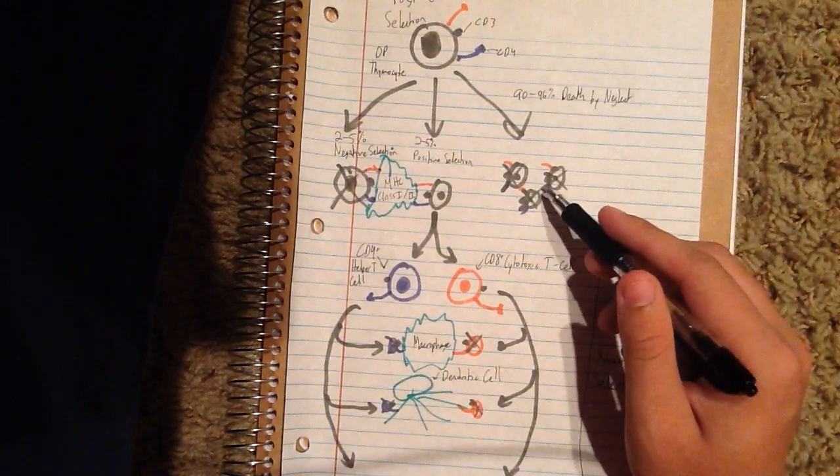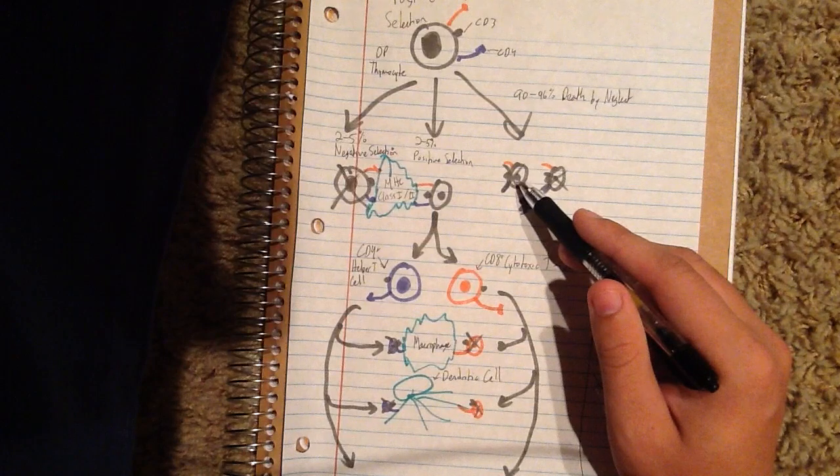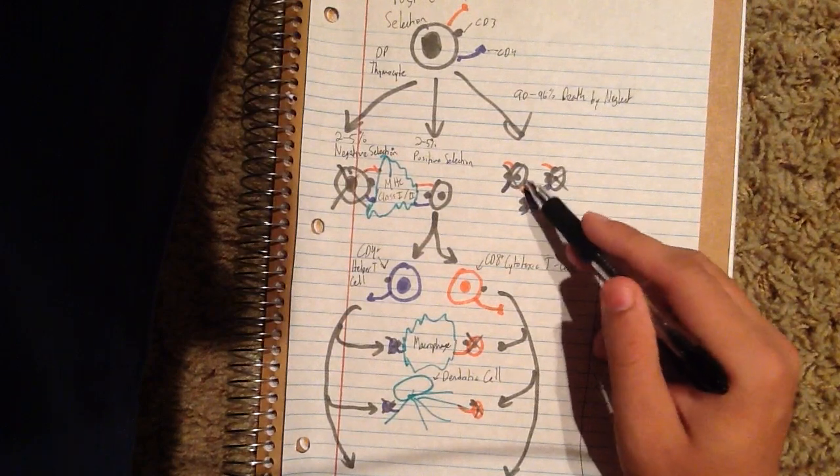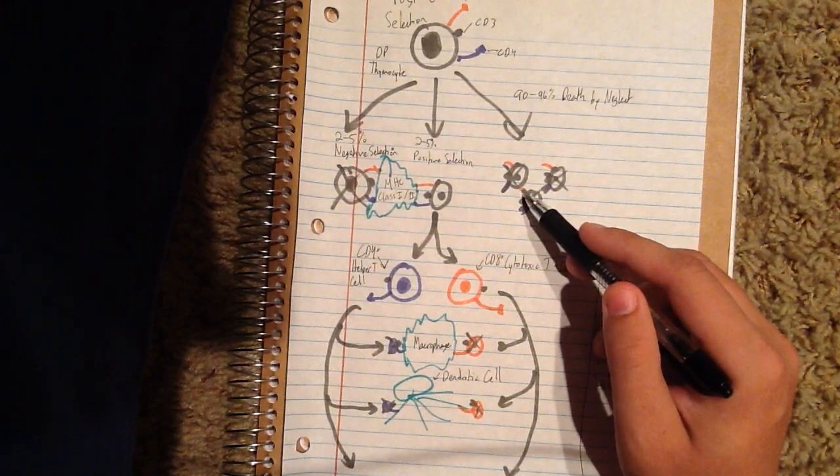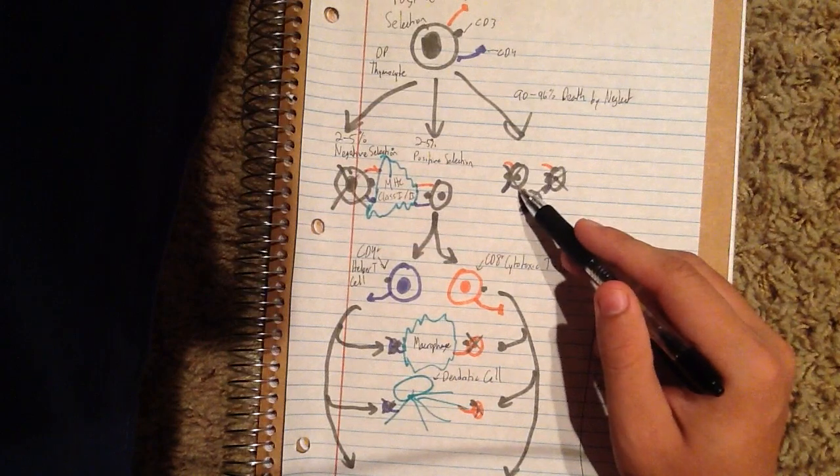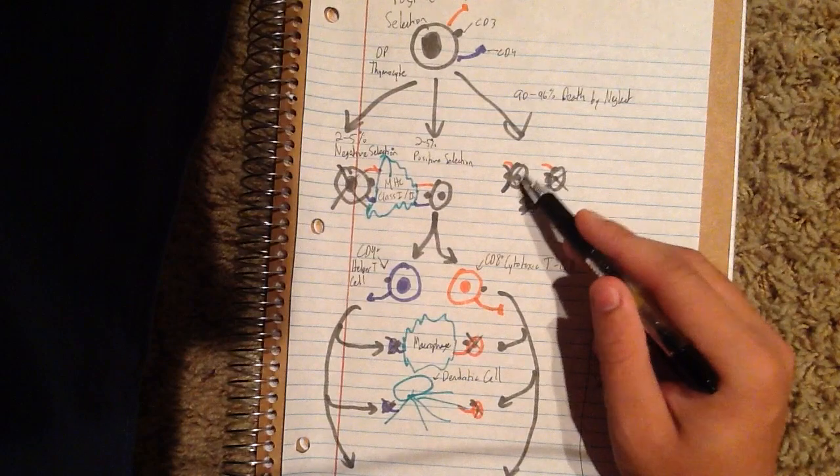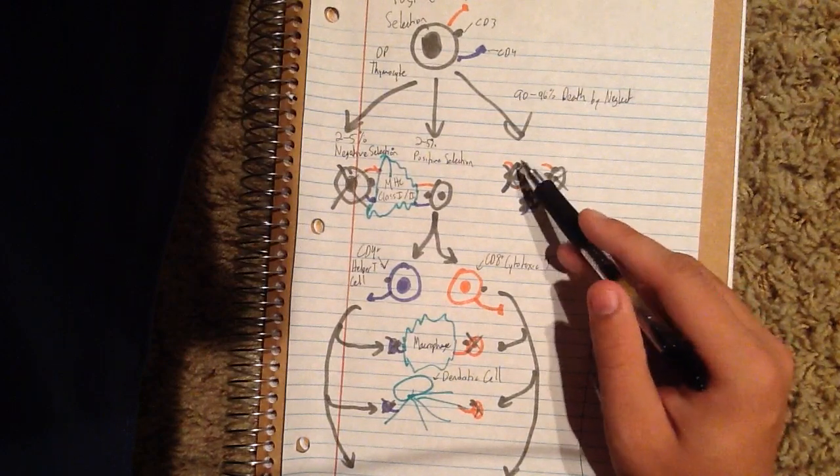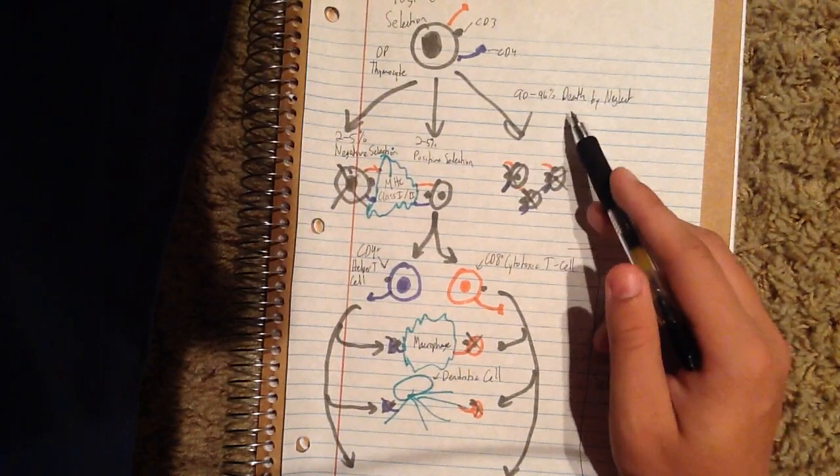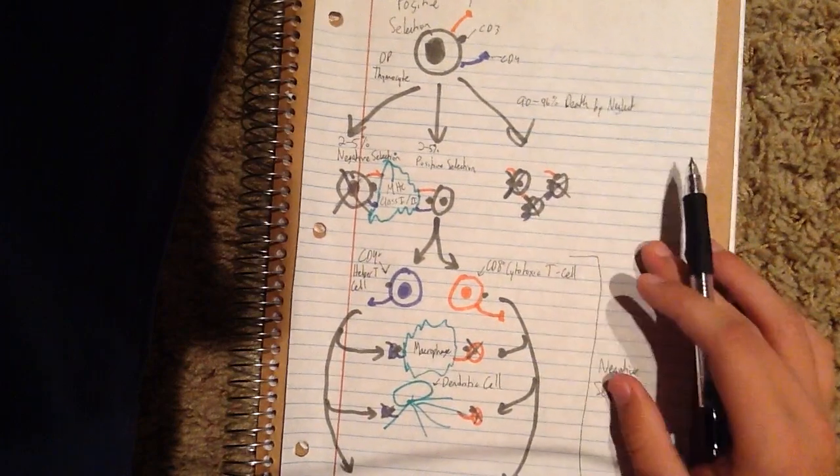Or most of the thymocytes may not actually bind to an MHC molecule at all. If this is the case, then they're going to die in the thymus after a few days of not being able to bind anything, and this is going to be known as death by neglect.